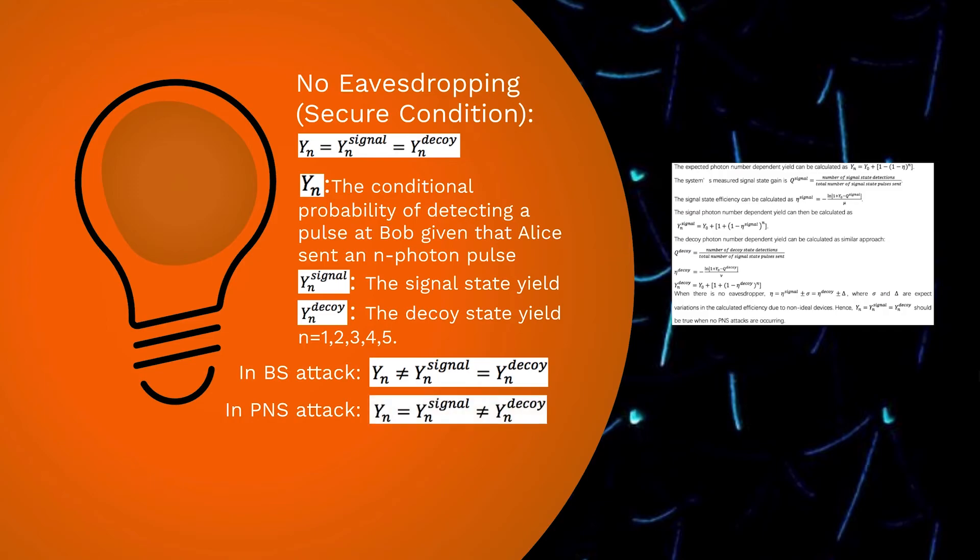In the photon number splitting attack, since the decoy state pulses have a lower mean photon number, there is a higher chance for decoy state pulses containing less than one photon per pulse than the signal state pulses.